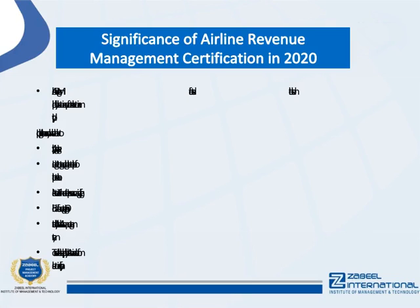Airline revenue management certification educates the methods applied by airlines to acquire revenue from seat sales to maximize productivity. Upon completing this course, you will have the skills to apply pricing strategies, generate revenue through the correct application of optimal seat allocation, make correct decisions to optimize revenue on a given flight, build a successful revenue management organization, understand why low-cost airlines require a revenue management system, and discover techniques applied by airlines to derive revenue from sales to maximize profitability.